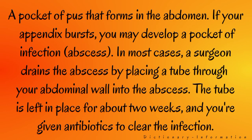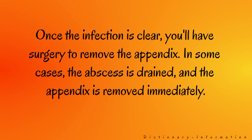Another complication is a pocket of pus that forms in the abdomen. If your appendix bursts, you may develop a pocket of infection called an abscess. In most cases, a surgeon drains the abscess by placing a tube through your abdominal wall into the abscess. The tube is left in place for about 2 weeks and you're given antibiotics to clear the infection. Once the infection is clear, you'll have surgery to remove the appendix. In some cases, the abscess is drained and the appendix is removed immediately.